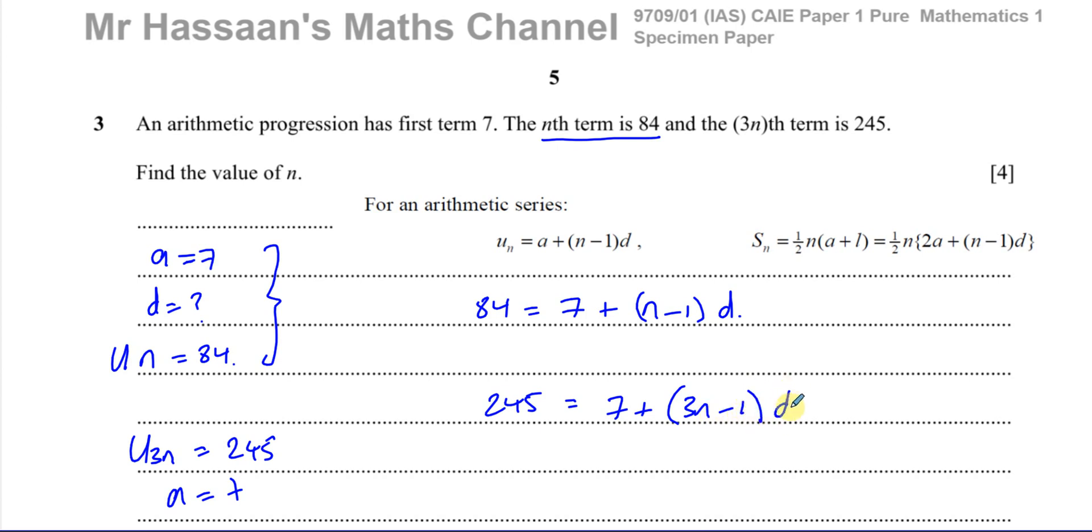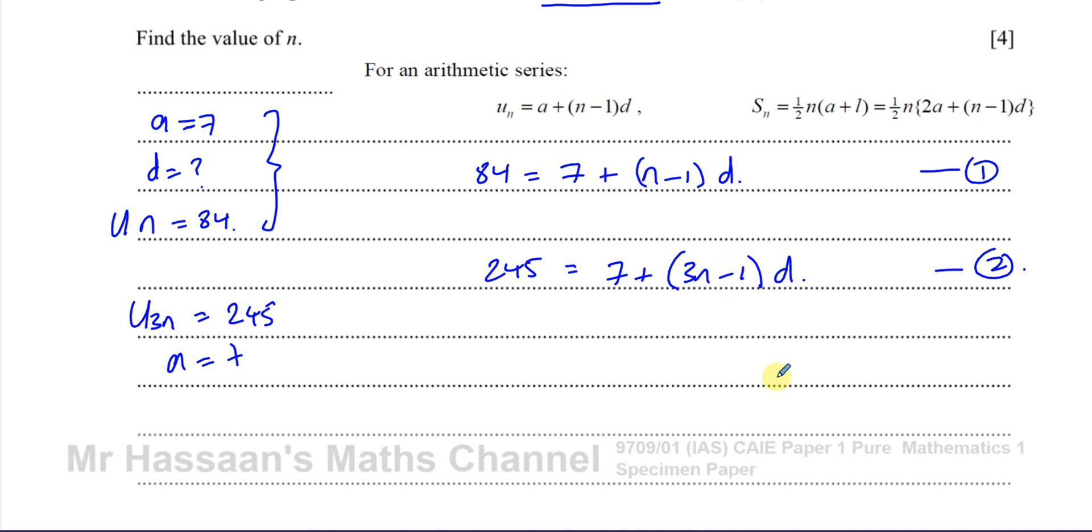So here we have two equations and we need to find the value of n. We have a pair of simultaneous equations here that we can solve. Now there's different ways we can solve this. But if I take equation 1 and I just subtract 7 from both sides in order to simplify this, I'll end up with n minus 1 times d equals 84 minus 7, which is equal to 77. And if I take equation 2, I do the same thing. I subtract 7 from both sides. I have here 3n minus 1 times d is equal to 245 minus 7, which is going to be 238.